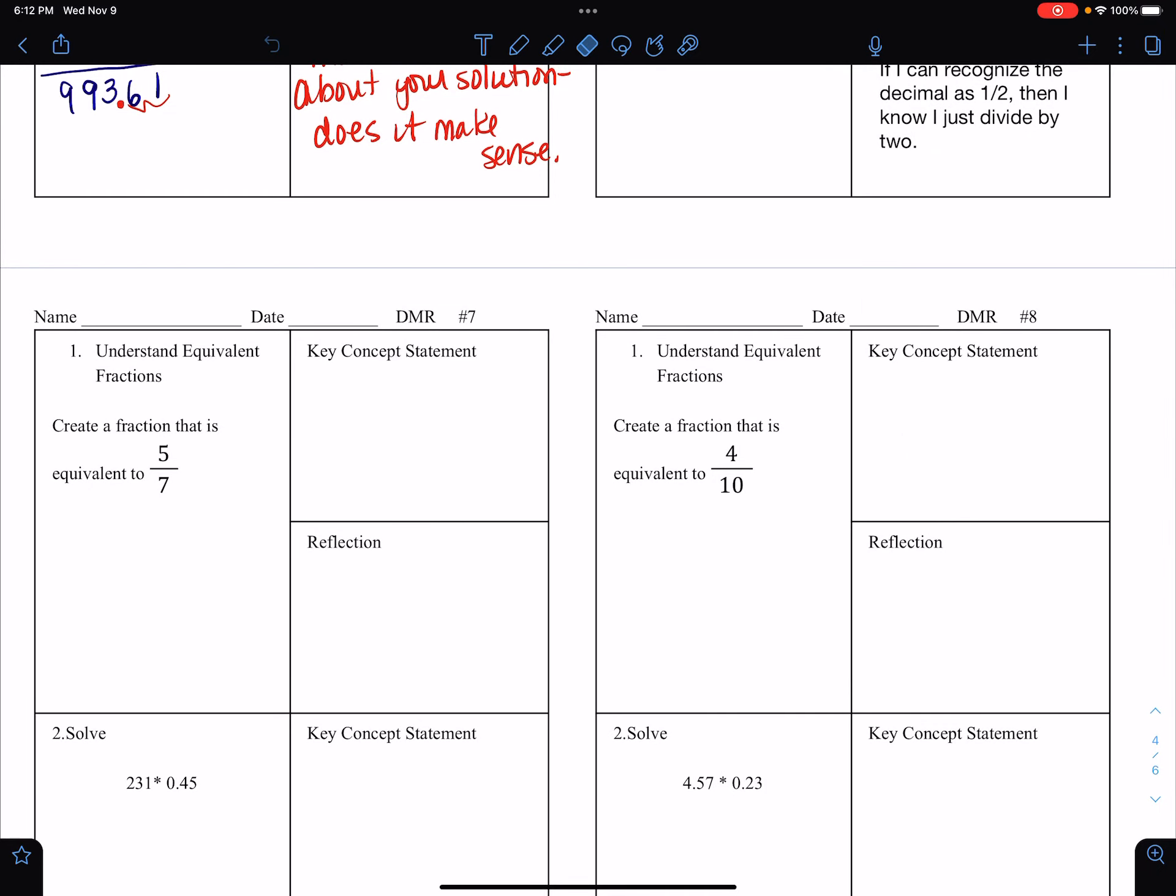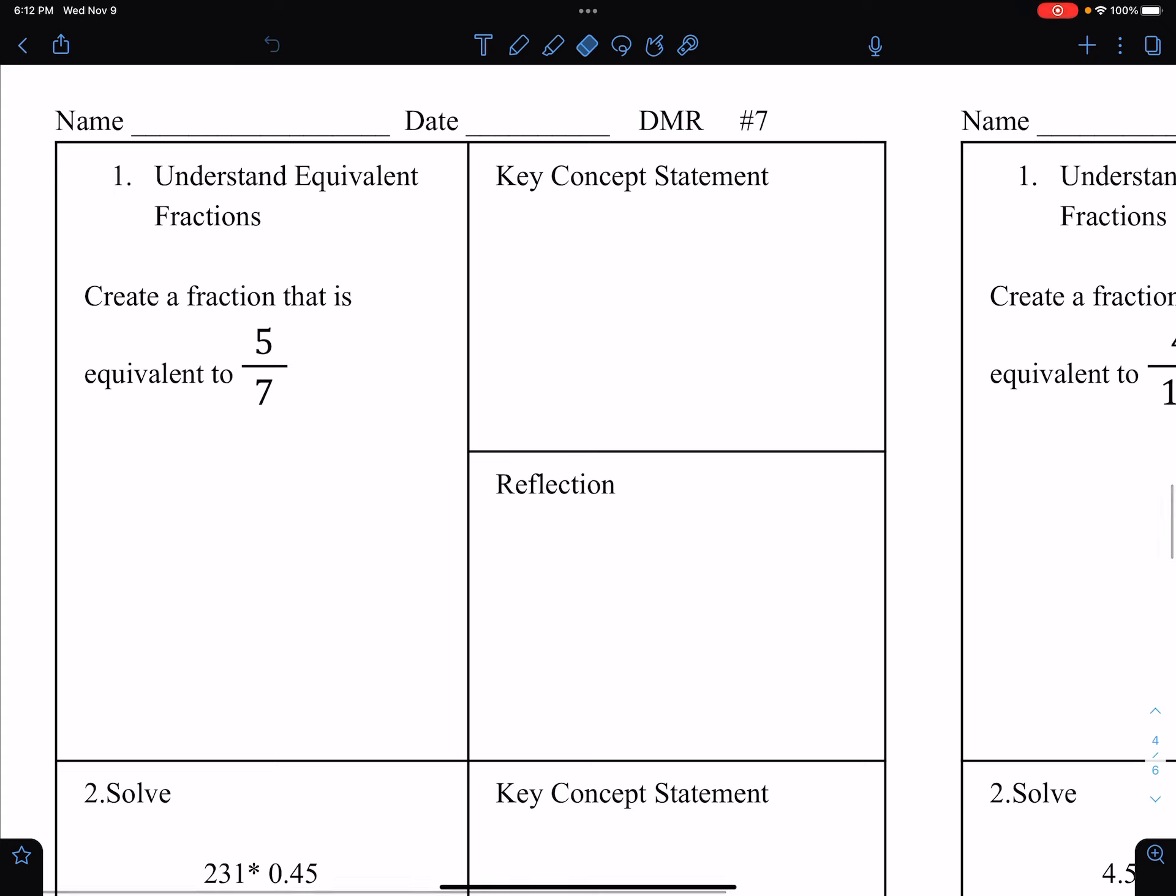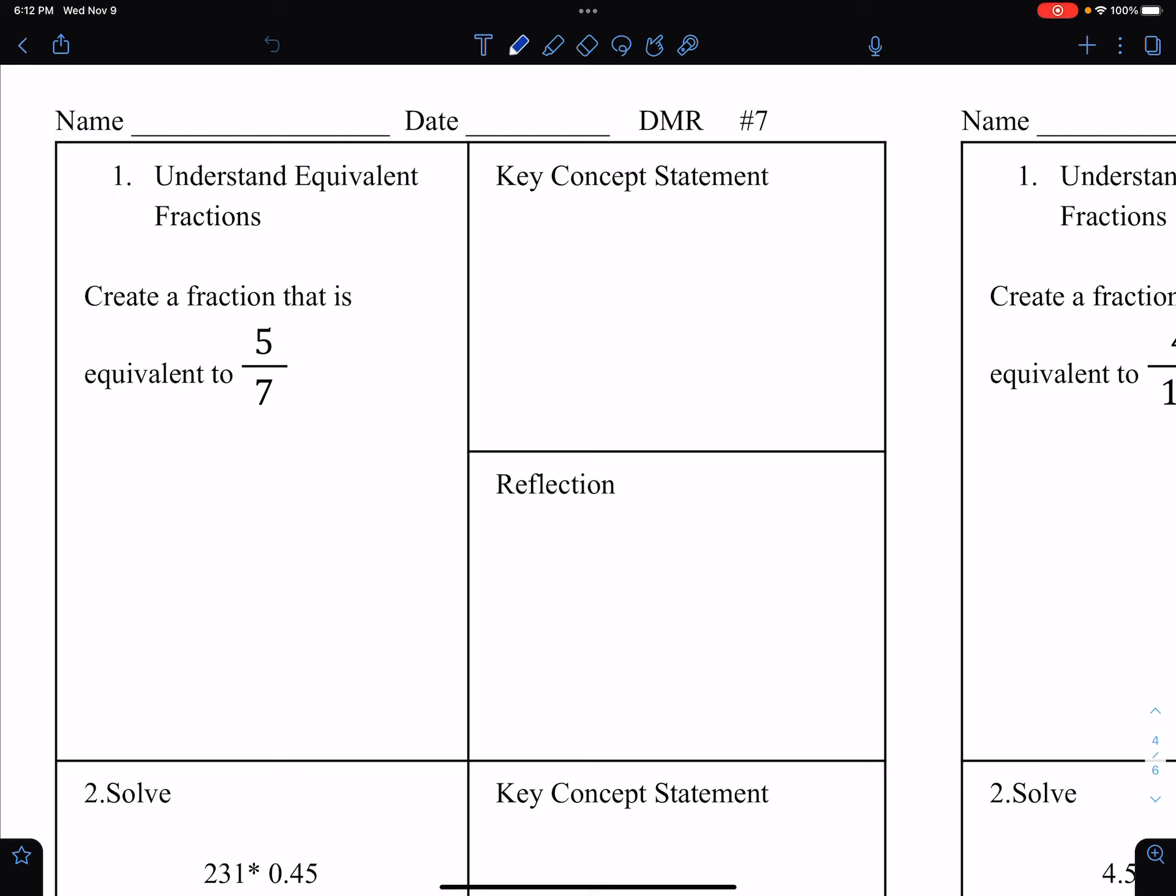Okay, we are going to do DMR number seven, working on the skills of equivalent fractions and multiplying decimals. If you hear a random cat meowing, that would be my cat. She will not leave me alone currently.